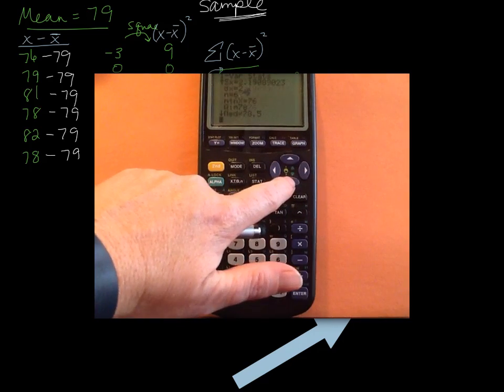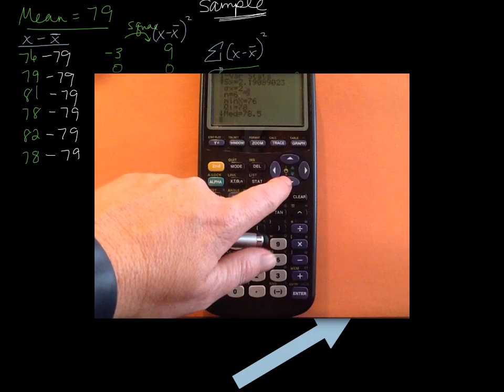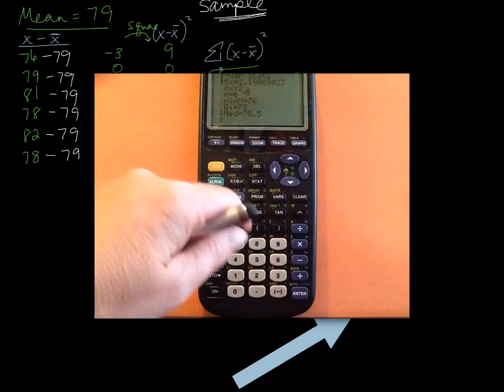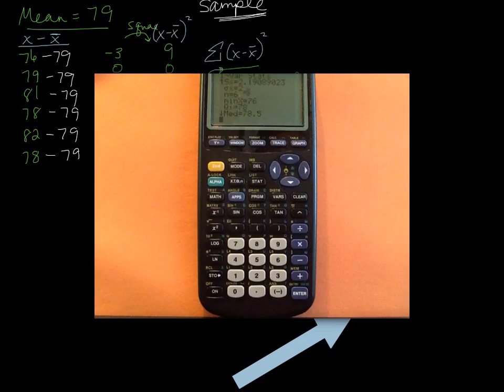And then we could scroll down here. Median, 78.5. You did that on a previous video. And mean, we did on a previous video. The only thing it doesn't give you is mode. So that's it.